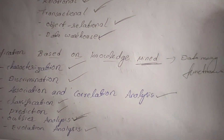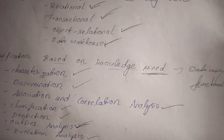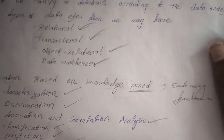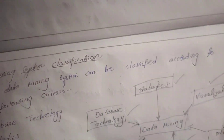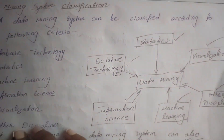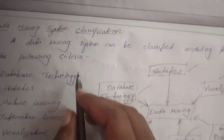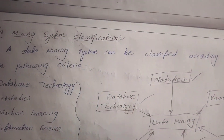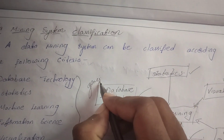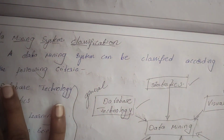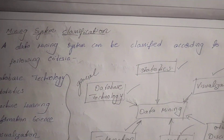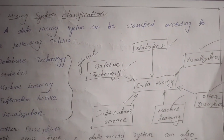To summarize, data mining systems are classified based on: applications adapted, knowledge mined using data mining functionalities, database mined, and general disciplines. That is all about the classification of data mining systems.